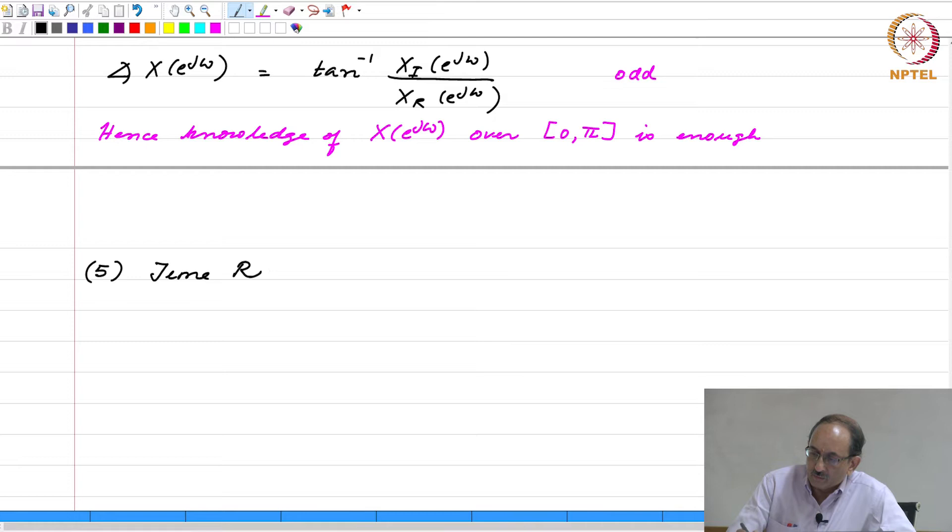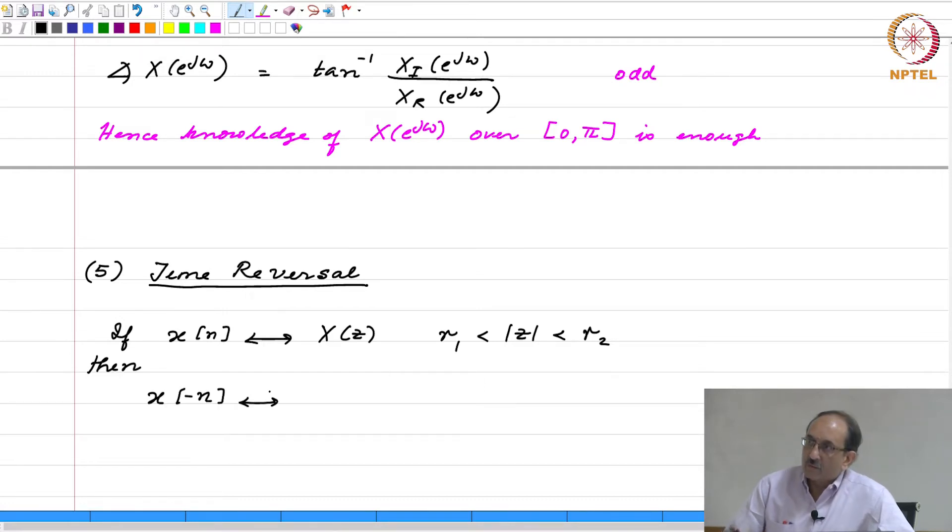The next property we can look at is time reversal. So, if x of n has, say transform x of z, yes question.